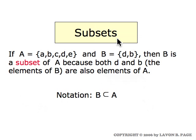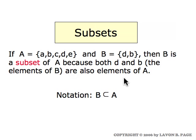A subset of a set is a part of a set. If A is the set consisting of the five letters a, b, c, d, and e, and capital B is the set consisting just of d and b, then B is a subset of A because all the elements of B are also elements of A. The notation used for subsets is a special symbol, and you read the expression as 'B is a subset of A.'